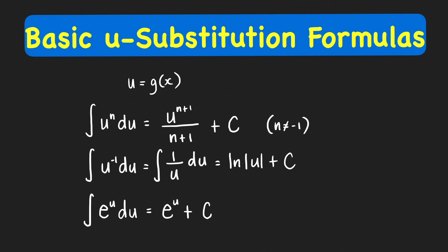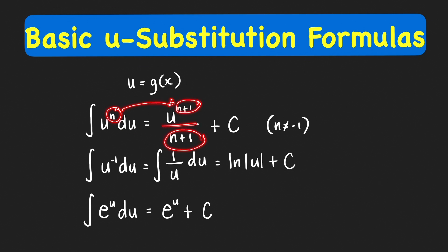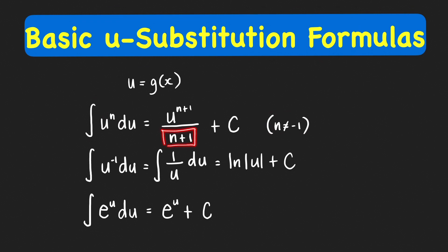So, the first formula is the power rule. If u is a function of x, then the antiderivative of u to the n du is equal to u raised to n+1, divided by the new power. This is true only when the power of u is not equal to negative 1, because when n is negative 1, the denominator becomes 0 and it will be undefined.